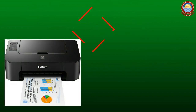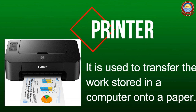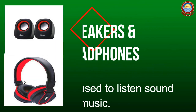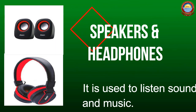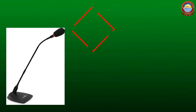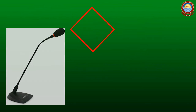Printer. It is used to transfer the work stored in a computer onto paper. The printed work is called a printout. Speakers and headphones. These are used to listen to sound and music. Microphone. It is used to record sound. It is also called a mic.